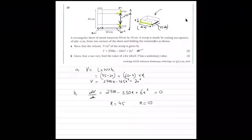Are both values acceptable? Would 10 just be acceptable? Because if you take 45 minus 2 into 45, one of the sides would come negative. Exactly. So only 10 is the required answer. Does everyone get this concept? Why are we ignoring 45 and accepting 10? If you take 45, this side is going to be negative, and we know that the length cannot be negative.